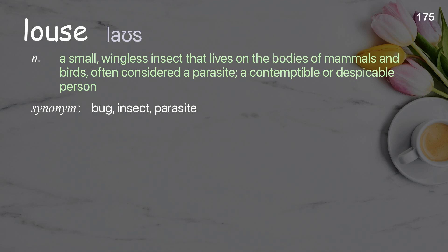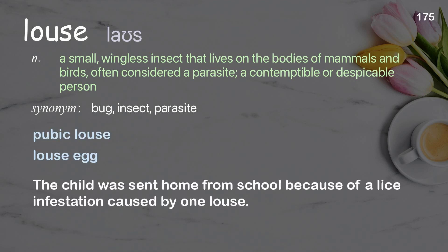Louse: a small, wingless insect that lives on the bodies of mammals and birds, often considered a parasite; a contemptible or despicable person. Examples: pubic louse, louse egg. The child was sent home from school because of a lice infestation caused by one louse.